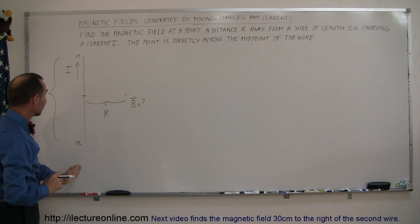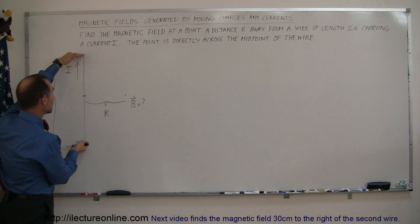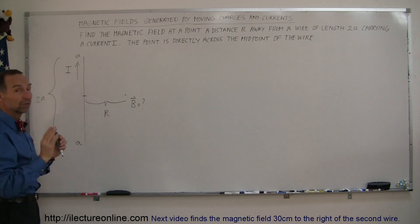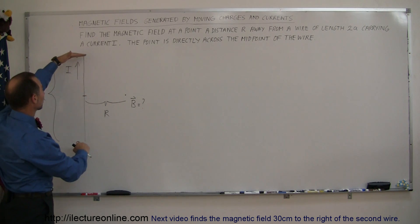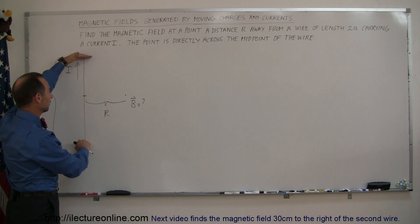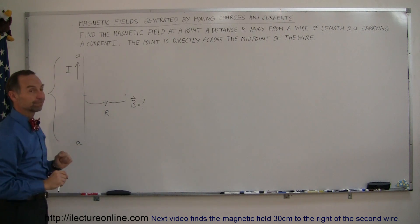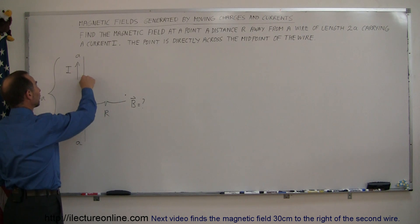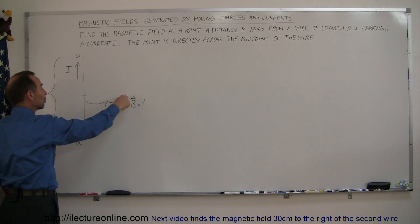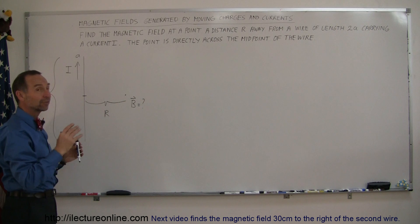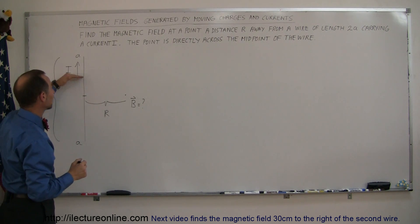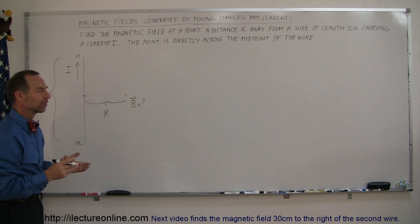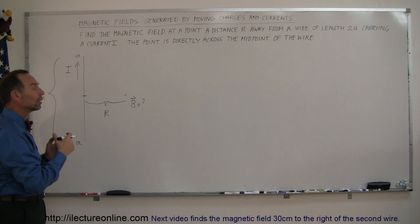Now the wire is not infinitely long — there's only a limited amount of wire here. We don't know what happens above or below that. We're only considering the contribution of the current in this segment of the wire at this location. Different pieces of the wire will have different contributions, and the contribution will diminish as the angle gets larger and we're farther away, so we'll need to use integration.